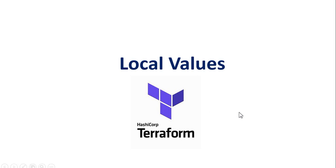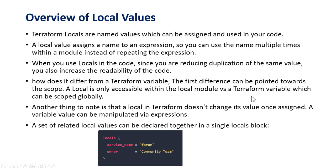Terraform locals are named values which can be assigned and used in your code. It's similar to a key-value pair. A local value assigns a name to an expression so you can use that name multiple times within a module instead of repeating the expression.